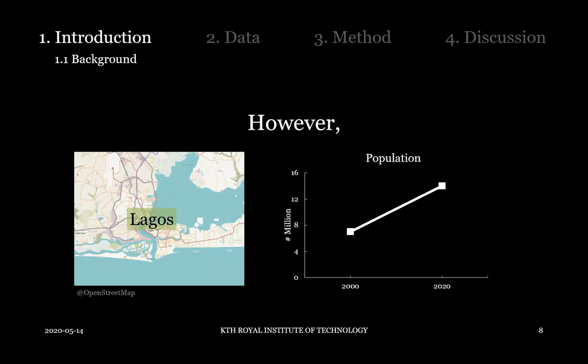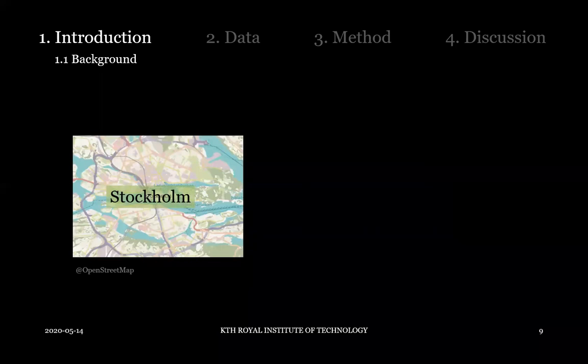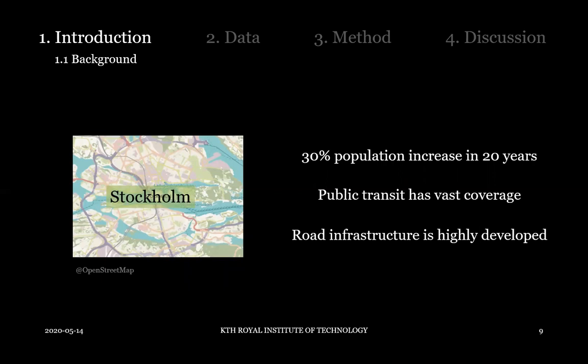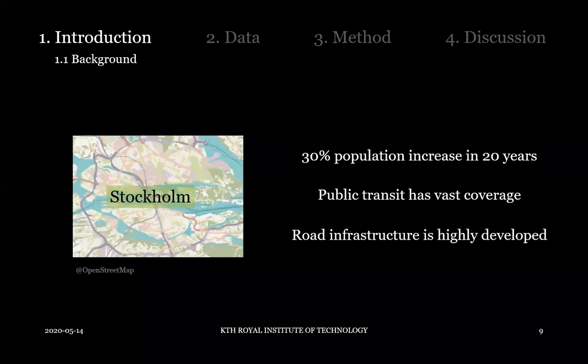Comparing this to a European city: Stockholm saw only a 30% population increase in 20 years, which is much smaller, and Stockholm is already one of the fastest-growing cities in Europe. Stockholm also had good infrastructure built in the 60s, 70s, and 80s with highly developed road infrastructure. That's the opposite of what's happening on the African continent, where we're seeing this huge population boom happening faster than ever before, causing very bad traffic in some of the fastest-growing cities.